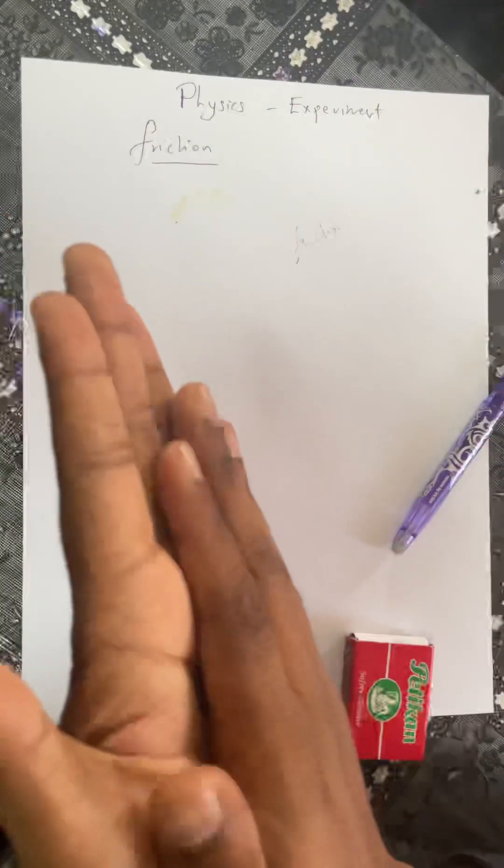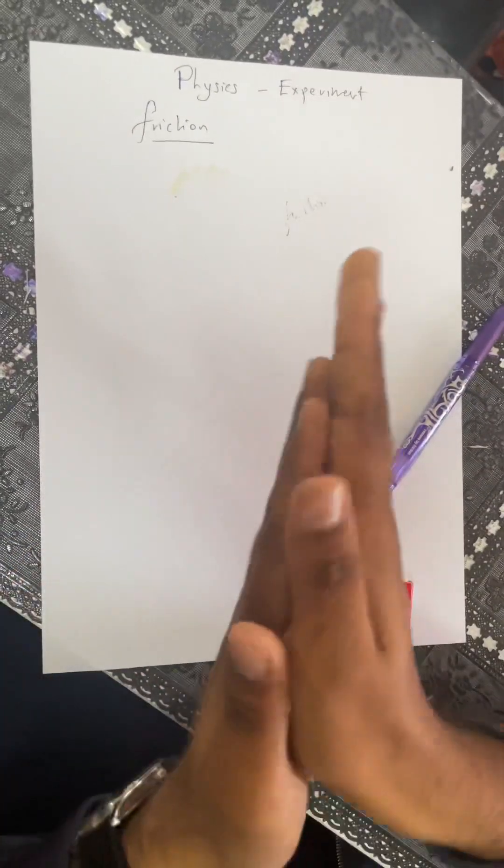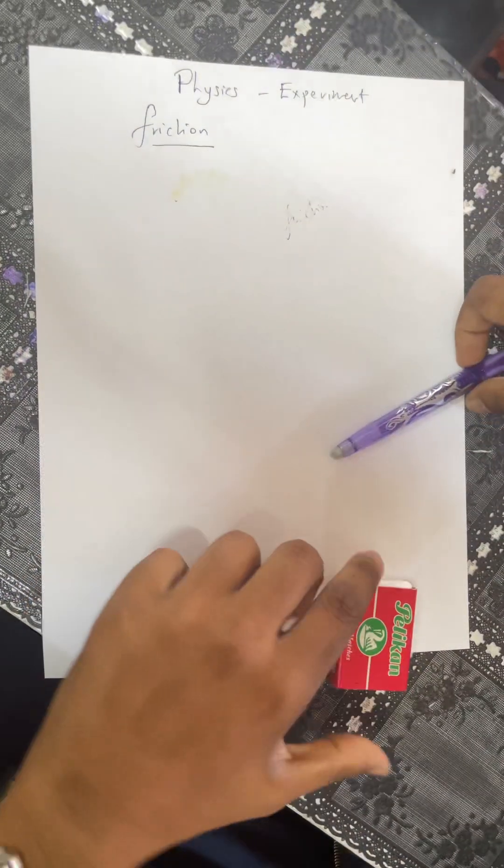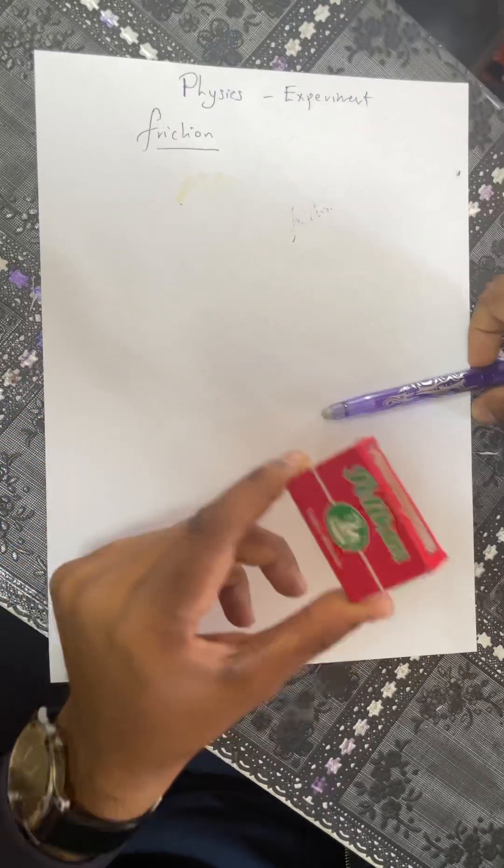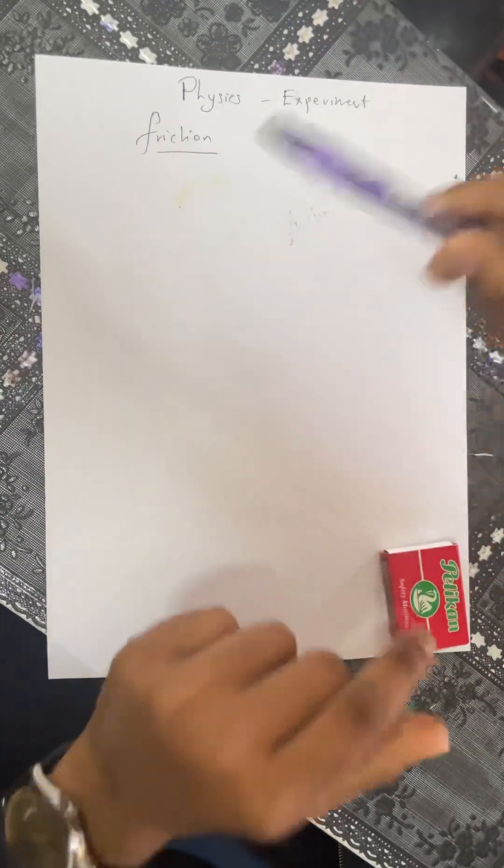Friction leads to the production of heat. As I rub my hands, it produces heat. And when I'm using the match, it is producing heat, and the heat is erasing the ink.